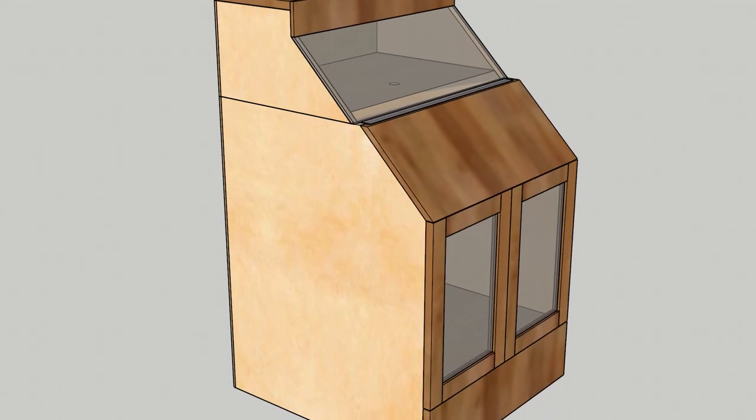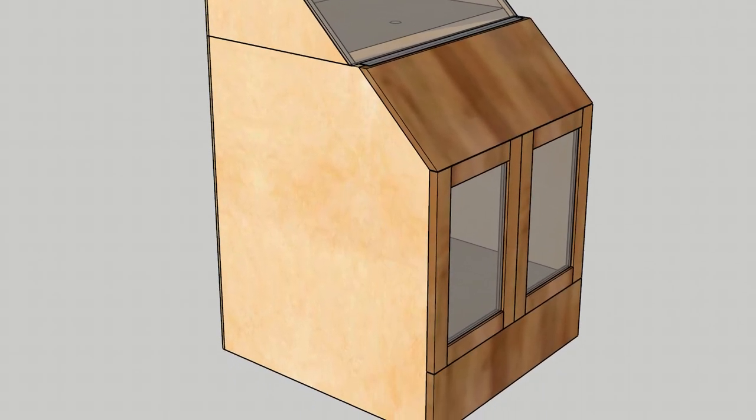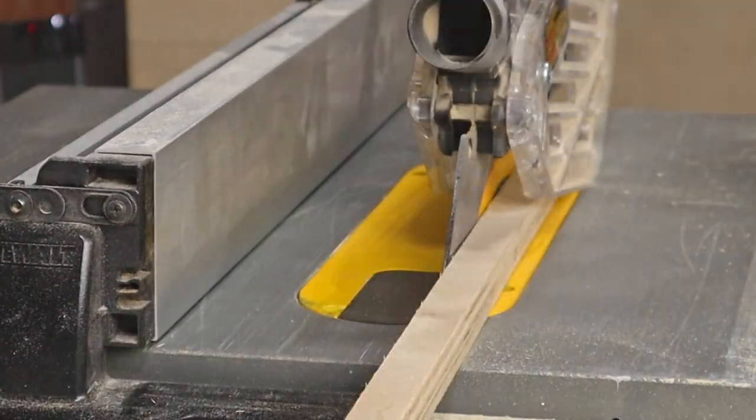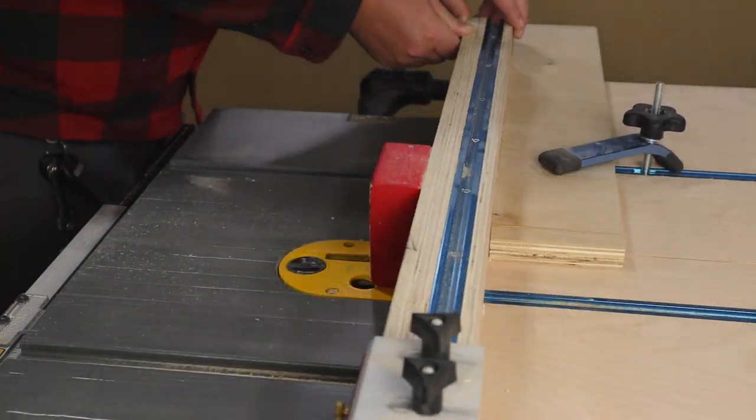The enclosure has a drawer on the bottom and that'll be used to hold all the bits and pieces that go along with the printer. So I cut some plywood to width on the table saw and then use the crosscut sled to cut them to length.